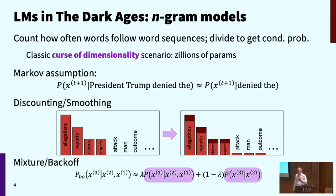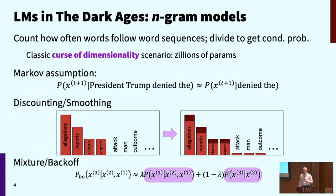This is a classic example of the curse of dimensionality, because what we'd like to do is use a lot of context to predict. But the problem is there are zillions of words — a quarter of a million or so in an average-size dictionary — and then you're getting squared, cubed spaces of context. There are just zillions of parameters and you can't possibly find enough text to estimate long context. At that point there was a sequence of games played: we made Markov assumptions and said a couple of words of context will be enough. Even then, you have to do methods of probabilistic smoothing using mixture models and things like that.